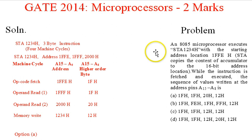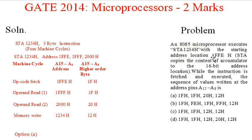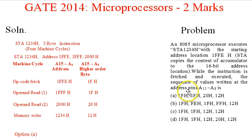We read out the problem: an 8085 microprocessor executes STA 1234H with the starting address location 1FEEH. The STA instruction copies the contents of the accumulator to the 16-bit address location. While the instruction is fetched and executed, the sequence of values written at the address pins A15 to A8 are given as four options and we have to find the right option.